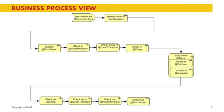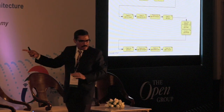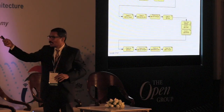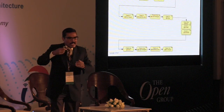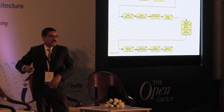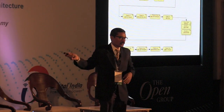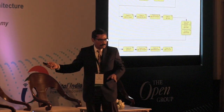The third diagram we created was for business users — a simple business process flow, a simple workflow showing how the solution will be utilized. Business users will like this because something triggers the usage of the solution, and then activities take place in sequence. This diagram models the behavior of the solution.